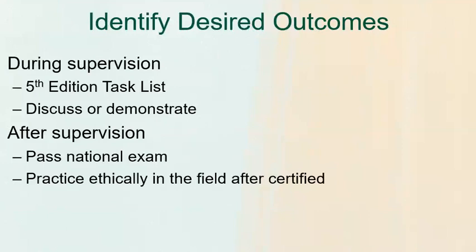First, identify desired outcomes. When we're talking about trainee desired outcomes, we are trying to think: what are we trying to get them to do? What is the goal of supervision? During supervision, we want to make sure that we are teaching and practicing, and our trainee is able to demonstrate all of the items on the fifth edition task list. That's our goal — the checklist the BACB has given us. Those are the things we want to work on.